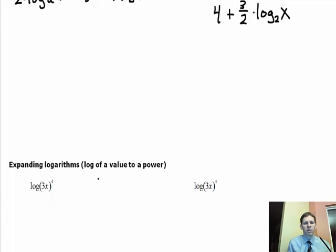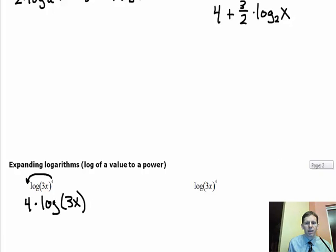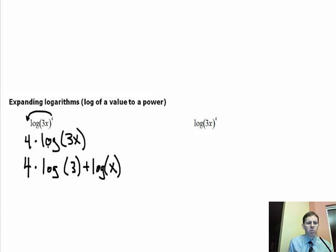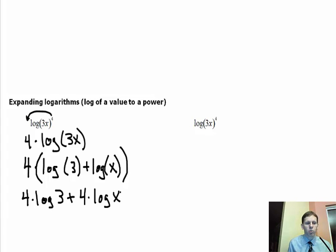The last example: expanding log of parentheses 3x to the fourth power. One way is to move the 4 out front first: 4 times log of 3x. Then because we have a multiplication problem inside, we can turn this into addition: 4 times the quantity log of 3 plus log of x. The 4 multiplies the entire logarithm expression, so put it in parentheses and distribute.